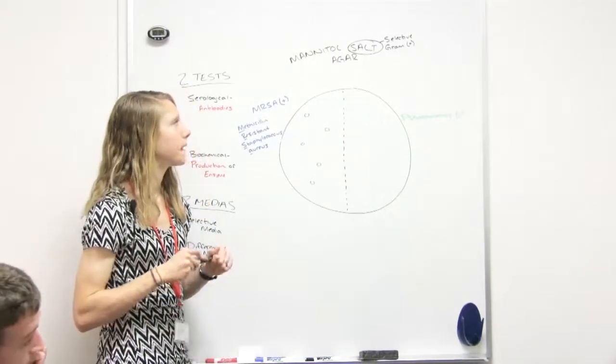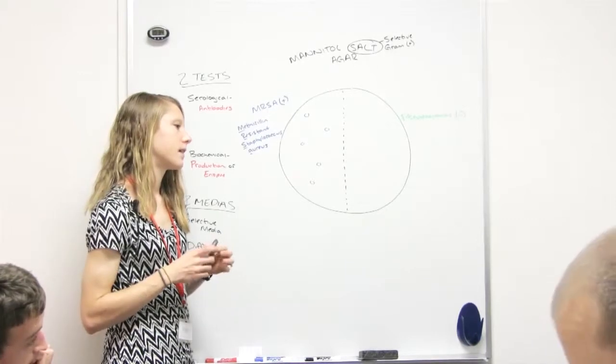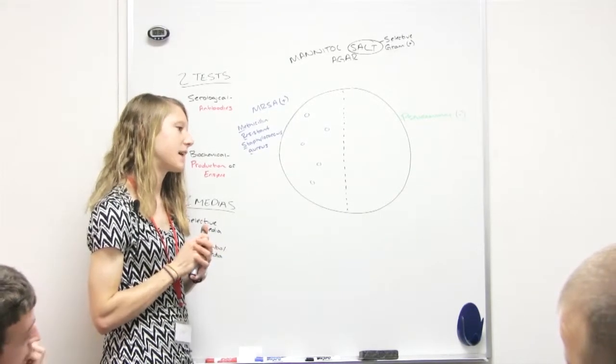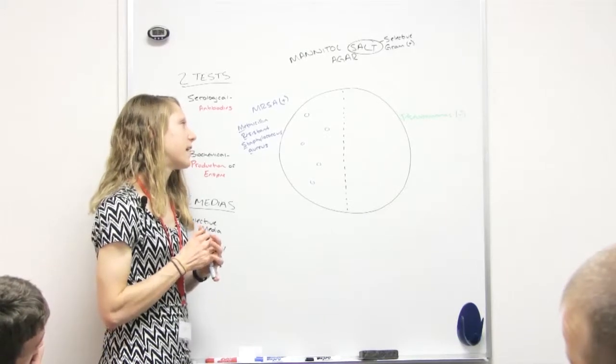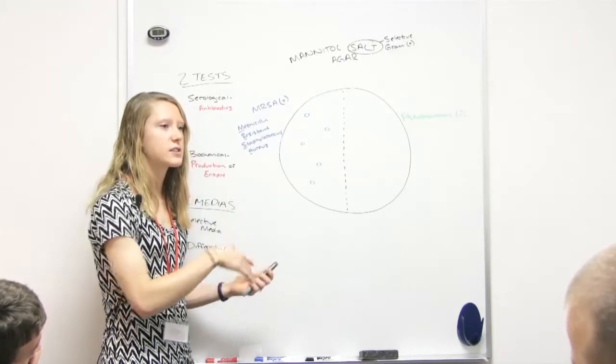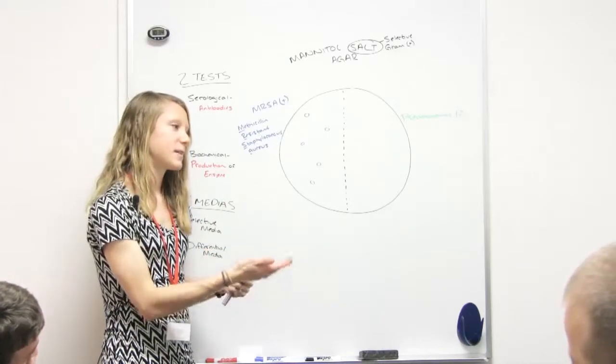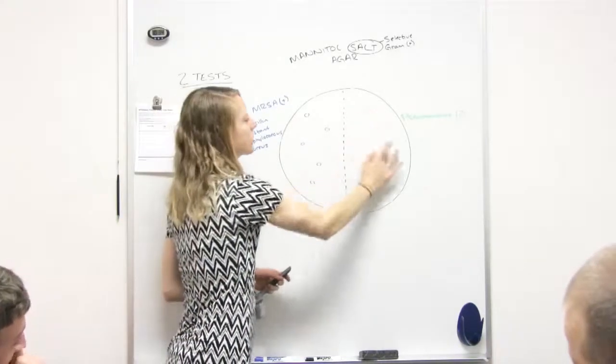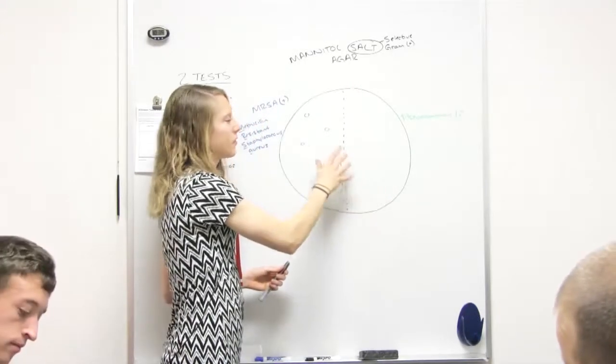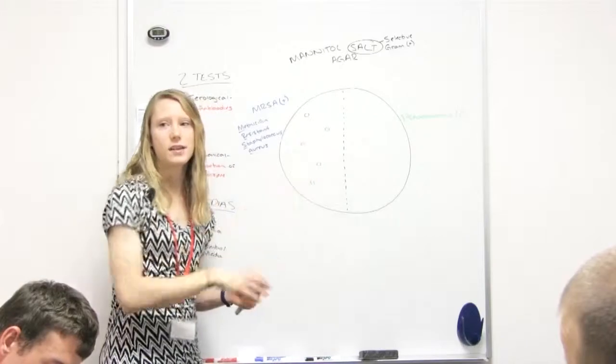Is it because the gram positive bacteria can tolerate the salt? Yeah, exactly. So gram positive, for the most part, have the capabilities to tolerate the high salt concentrations, whereas gram negative doesn't. So because of that, the gram negative, you can streak them on here, but they won't grow because they're inhibited by the high salt. Whereas the gram positive, they don't care. So they start growing.